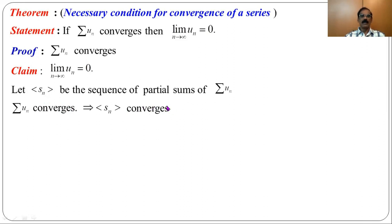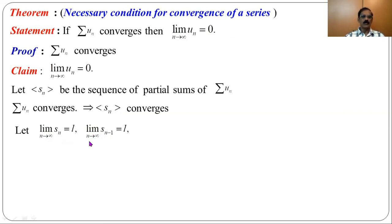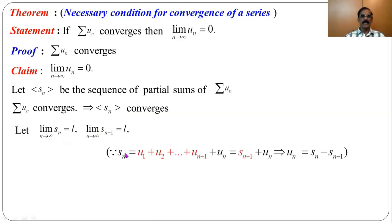When we say sₙ converges, taking the limit of sₙ as n tends to infinity must be a real number. Therefore, let the limit of sₙ as n tends to infinity be l. Since the limit of sₙ as n tends to infinity is l, the limit of sₙ₋₁ as n tends to infinity is also l. Now, sₙ is the sum of the first n terms: u₁ + u₂ + u₃ + … + uₙ₋₁ + uₙ, and the sum u₁ + u₂ + … + uₙ₋₁ is nothing but sₙ₋₁.